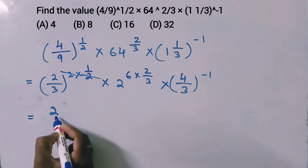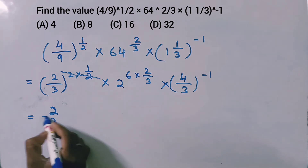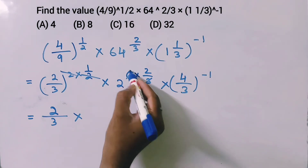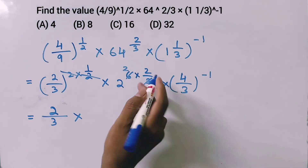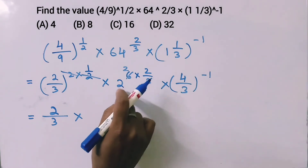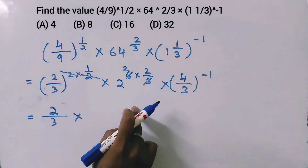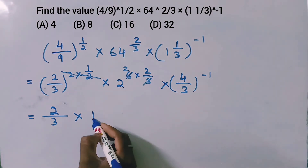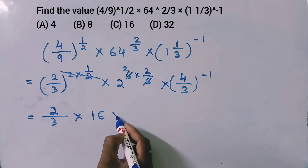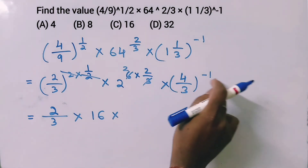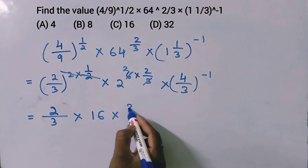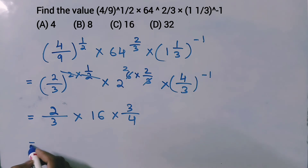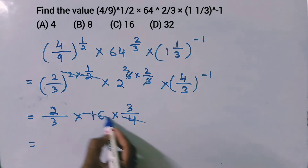Combining the values: 2 by 3 into 16 into 3 by 4, which simplifies to give the final answer.